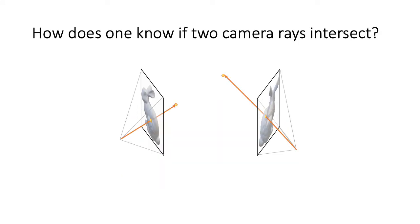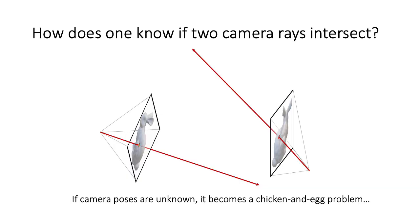The problem then becomes, how do we know if the camera rays of the pixels intersect in 3D or not? The problem is trivial when the camera poses are known. Unfortunately, it becomes extremely challenging when camera poses are unknown, which is the common setting in 3D reconstruction.